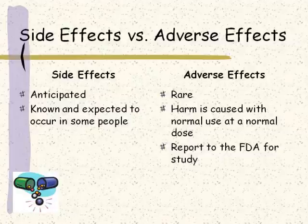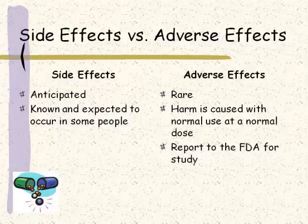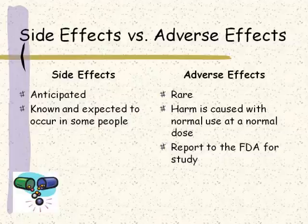Here are some of the differences between side effects and adverse effects. Side effects — we know people get them; they're anticipated. If you read the bottle, it tells you about side effects. A lot of things cause people to be nauseous. So side effects are known and expected to occur in some people. Adverse effects are rare — harm is caused with normal use of the drug at the normal dose. These adverse effects should be reported to the FDA so they can study further whether this is really a dangerous drug, whether it needs to be taken off the market, whether the benefits outweigh the risks, or who is really at risk of getting this adverse effect.